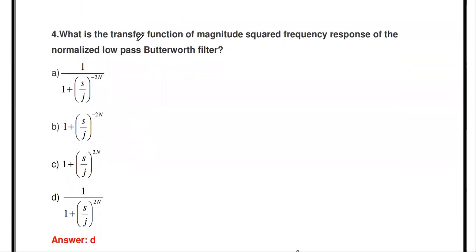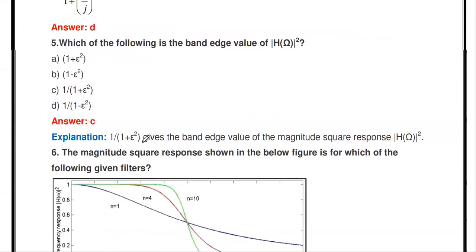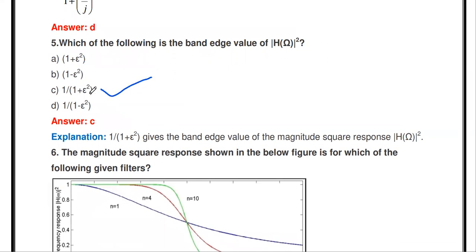Next: what is the transfer function of the magnitude squared frequency response of the normalized low-pass Butterworth filter? The answer is 1 divided by (1 plus (S/j) to the power 2N). This is the magnitude squared frequency response of the Butterworth filter. The band edge value of |H(j*omega)|² is 1 divided by (1 + epsilon²).